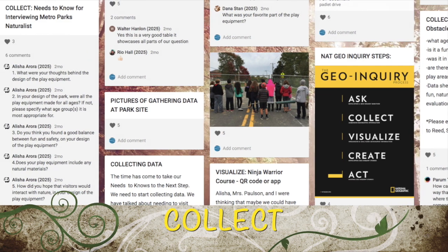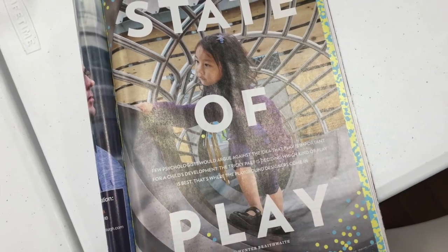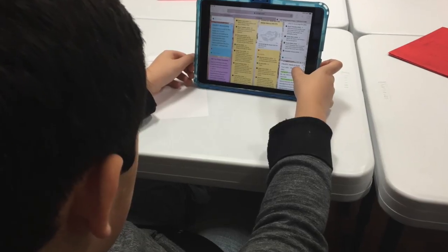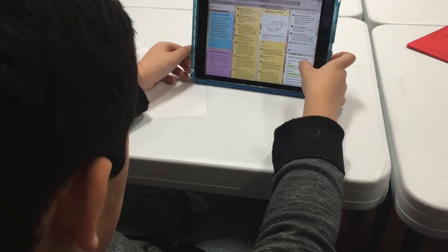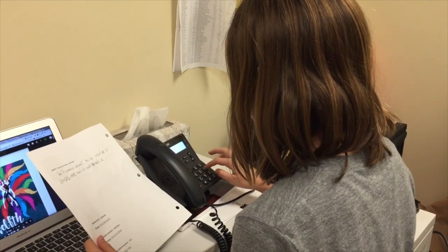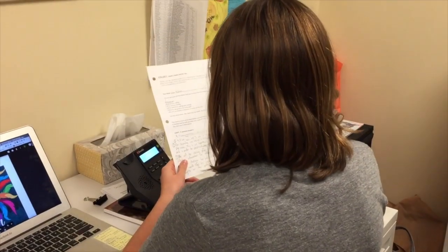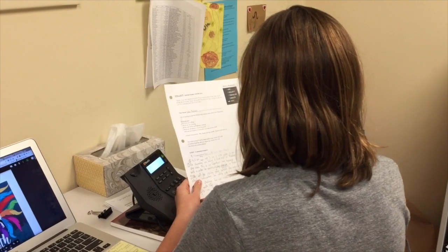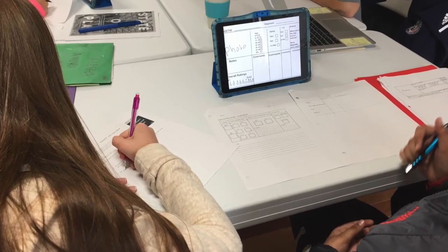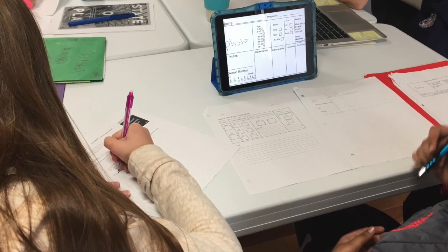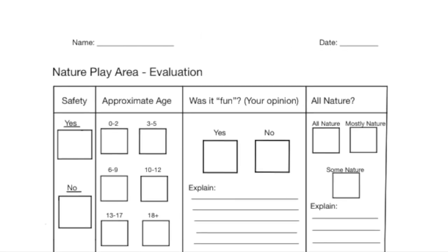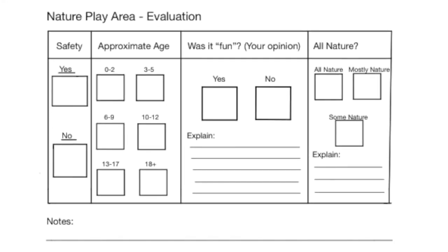We were excited about our question, so we researched more online and read an article on Nature Place play areas. We recorded what we learned on Padlet so we could share the information with each other. We decided that we needed to take a field trip to different parks that have nature-based play areas. We designed our own data collection forms based on our NatGeo question that would allow us to rate each play element according to its safety, age appropriateness, how much nature was in the design, and of course, how fun it was to play on.